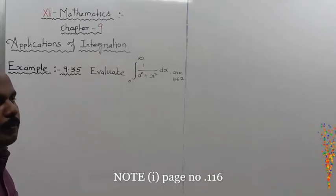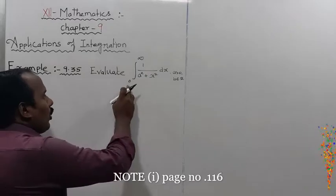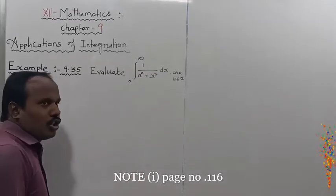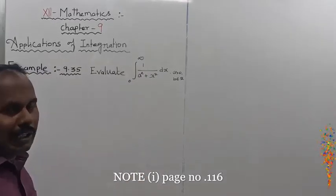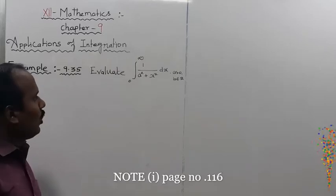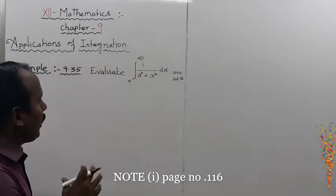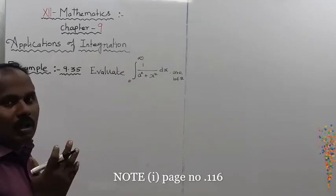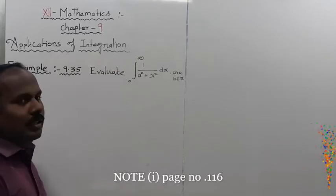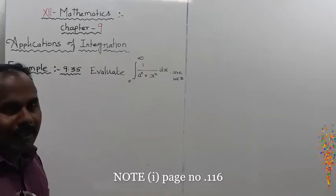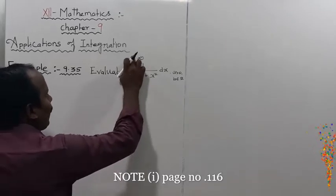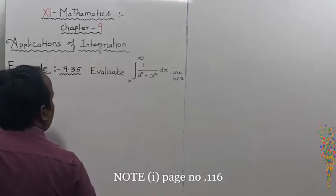What is improper integration? The limit is going to 0 to infinity, a to infinity, or minus infinity to plus infinity. When the limit behaves in these ways, that type of integration is called improper integration — for example, 0 to infinity is called improper.